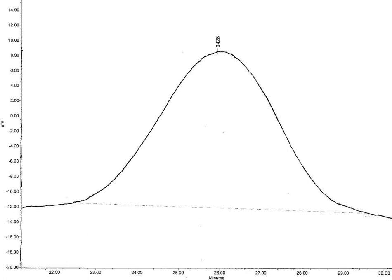Gel permeation chromatography has become the most widely used technique for analyzing polymer samples in order to determine their molecular weights and weight distributions. Examples of GPC chromatograms of polystyrene samples with their molecular weights and dispersities are shown on the left.